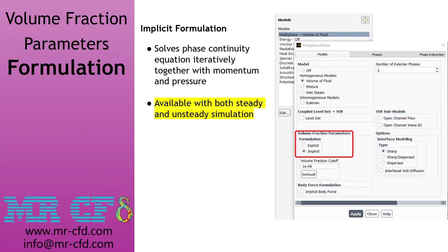Regarding the implicit formulation, this method solves the phase continuity equation iteratively together with momentum and pressure. In contrast to the explicit formulation, which is only available when the transient solver is enabled, the implicit method can be used for both transient and steady solvers.